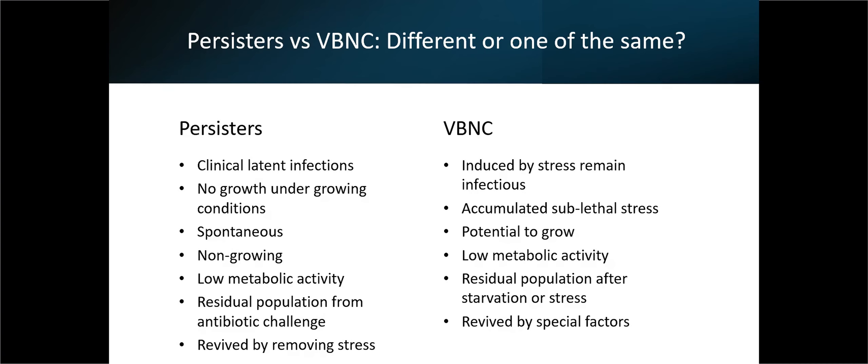The way the science developed is the persisters are of clinical regions - latent infections. They appear spontaneously in a population, again contentious. They're non-growing, low metabolic activity, and they survive antibiotic challenge by virtue of not growing. They can revive just by taking the stress away, the antibiotic stress. Whereas the VBNC are beaten up cells. They've got to a point where they can't grow. They can potentially grow, but you need special reagents or special agents. They're a residual sub-population, and you need special factors to revive.